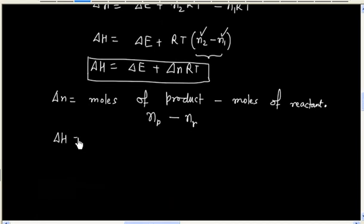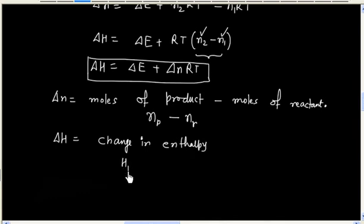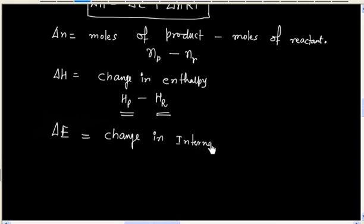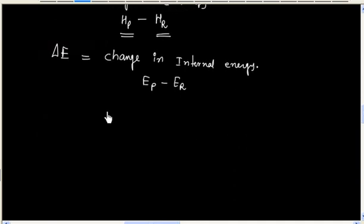ΔH denotes change in enthalpy, that is Hp − Hr (enthalpy of products minus enthalpy of reactants). Similarly, ΔE is the change in internal energy, that is internal energy of products minus internal energy of reactants. So the equation is: ΔH = ΔE + ΔN·R·T.